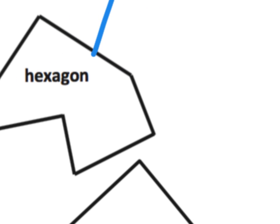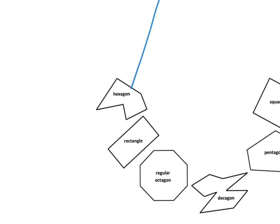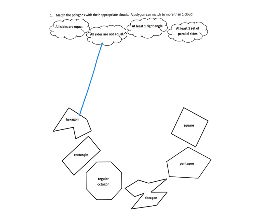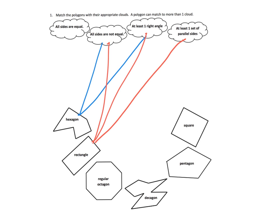Does it have at least one right angle? It kind of looks like — if I were to zoom in — yes, I'm going to go with that looking like a right angle there. So I'll make a connection: it does have at least one right angle. Does it have at least one set of parallel sides? I'm going to say no — these two sides don't look quite parallel. So the hexagon makes two out of four connections. Now for the rectangle: are all sides equal? No, so no connection. Are all sides not equal? Yes, connection. At least one right angle? Yes, in fact it looks like four right angles. At least one set of parallel sides? Sure. So the rectangle makes three out of four connections.